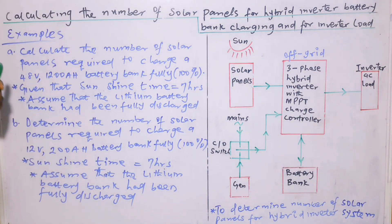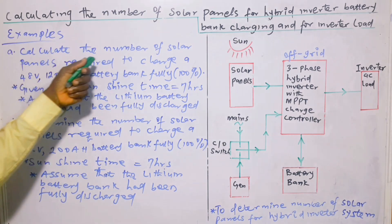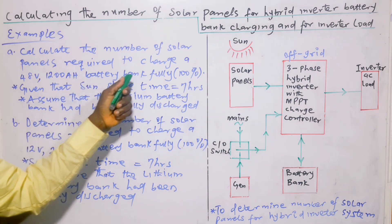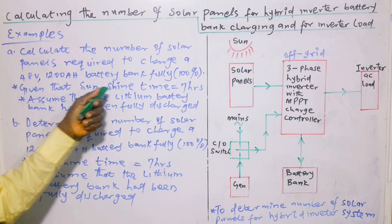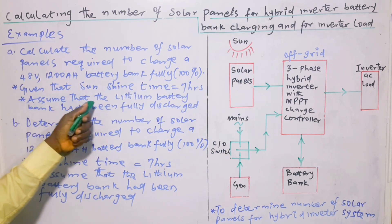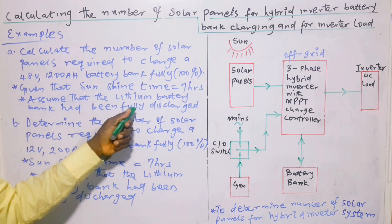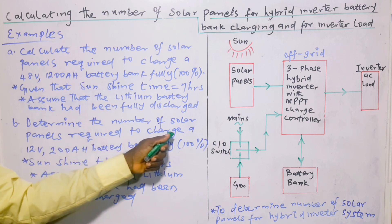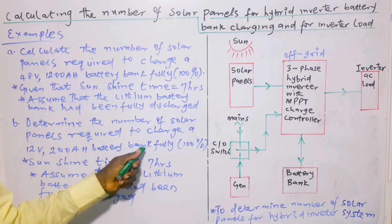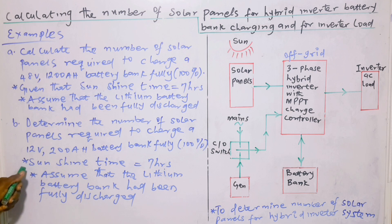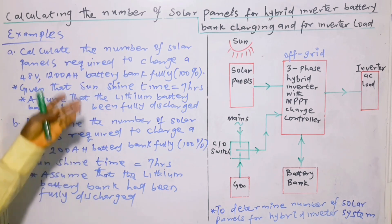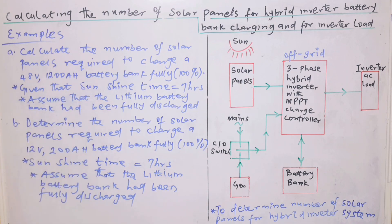Now I will use an example to illustrate. Example A: Calculate the number of solar panels required to charge a 48-volt, 1,200-ampere-hour battery bank fully (100%), given that sunshine time equals seven hours. Assume the lithium battery bank had been fully discharged. Example B: Determine the number of solar panels required to charge a 12-volt, 200-ampere-hour battery bank fully (100%), with sunshine time also equal to seven hours, assuming the lithium battery bank had been fully discharged.